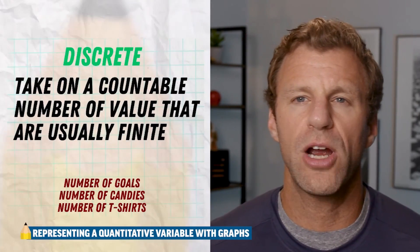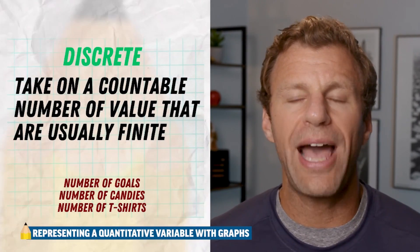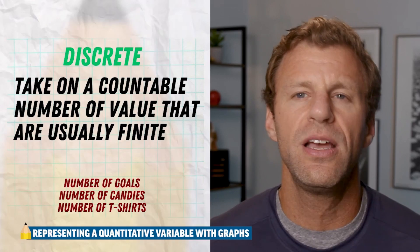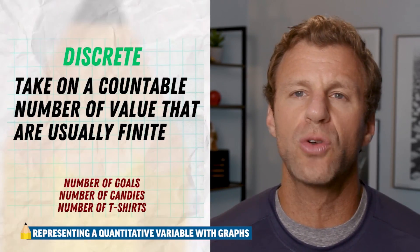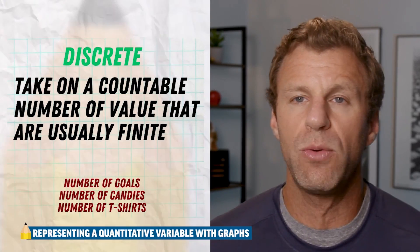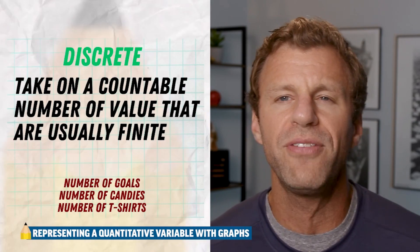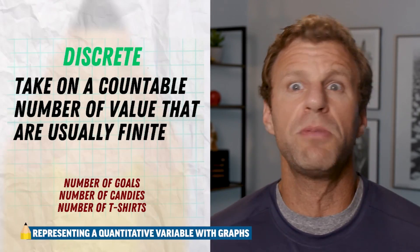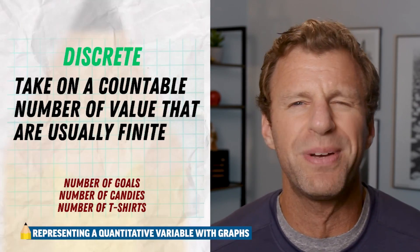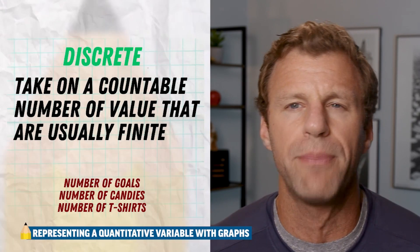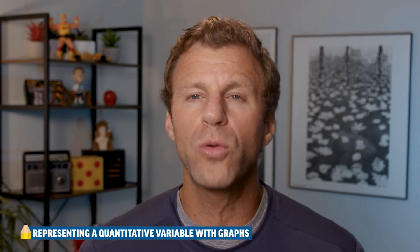A discrete quantitative variable takes on values that are countable and finite. For example, the number of goals that you can score in a soccer game. That's going to be 0, 1, 2, 3, 4, 5. You might say I guess it can be infinite, you can have a million goals in a game. But realistically, no, you can't. So typically with a discrete quantitative variable, we're thinking whole numbers only.